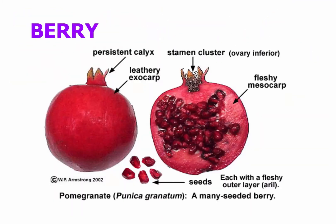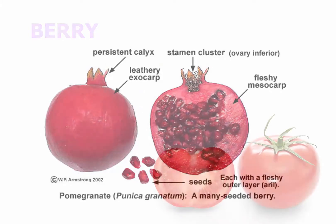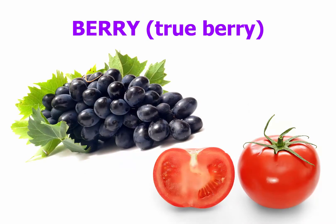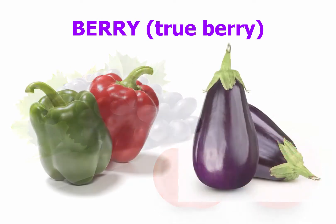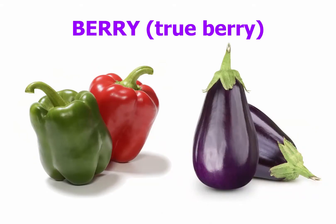Berries usually develop from a compound ovary and commonly contain more than one seed. The entire pericarp is fleshy and it is difficult to distinguish between the mesocarp and the endocarp. Three types of berries may be recognized. A true berry is a fruit with a thin skin and a pericarp that is relatively soft at maturity. Typical examples include tomatoes, grapes, peppers, and eggplants.